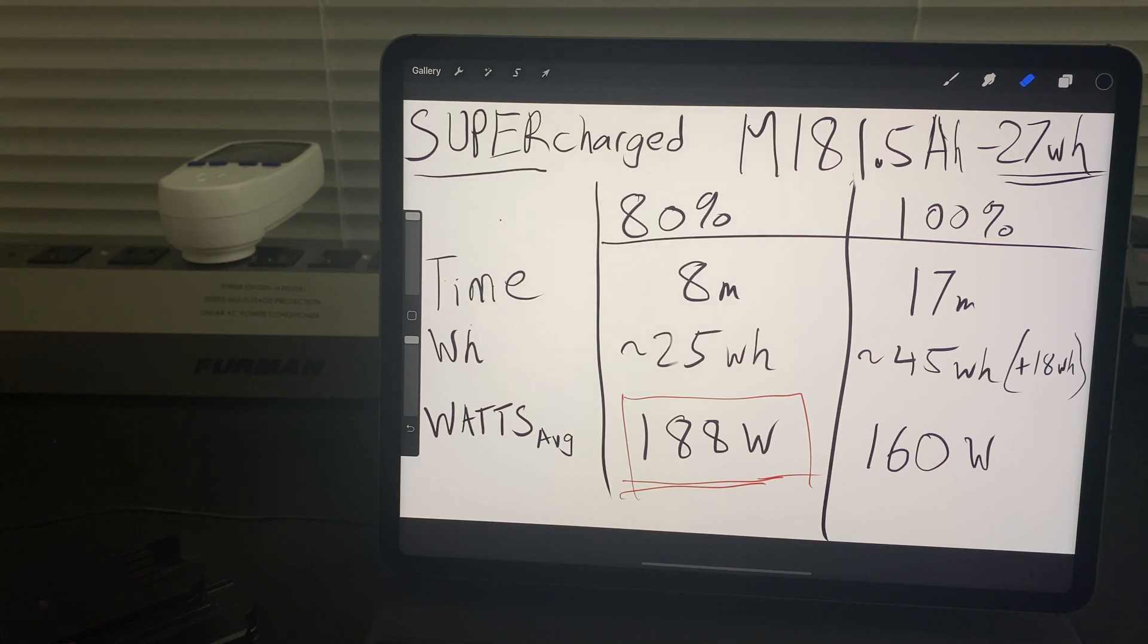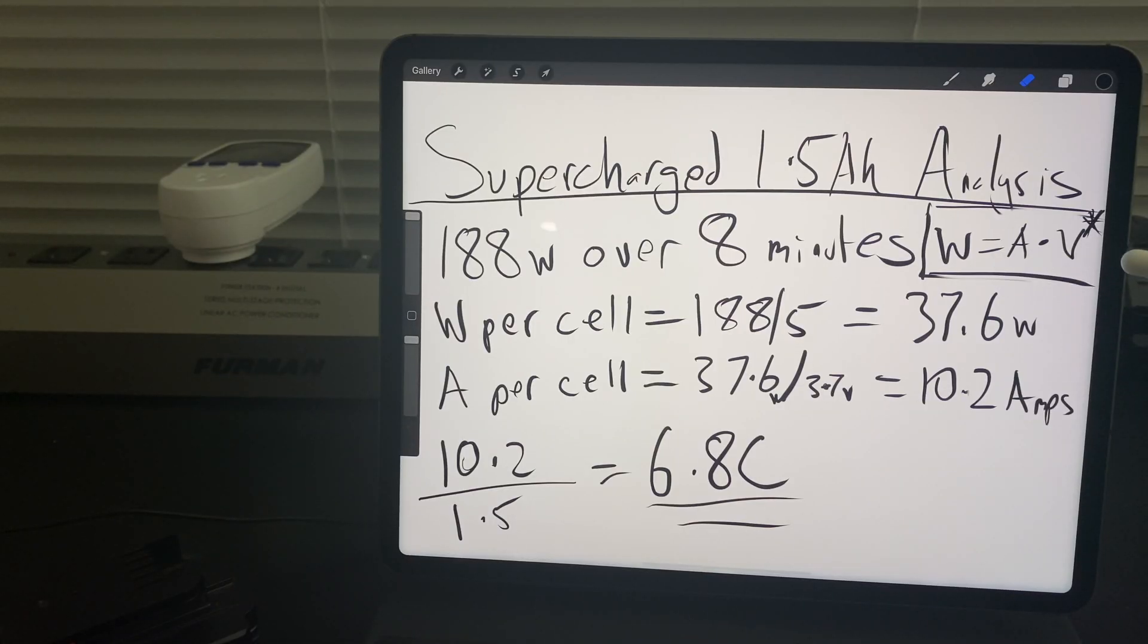So let's take a look at what that means in terms of a C rating per cell. We have 188 watts absorbed over eight minutes. Watts per cell is 188 over 5 which is about 37.6 watts. Now amps per cell, which is 37.6 watts divided by the volts. I'm going to use 3.7 volts because that is the nominal voltage of the cell and we're seeing about 10.2 amps. A 1C rating for this 1.5 amp hour cell would be about 1.5 amps. A 10.2 amp charge for this 1.5 amp hour cell would be 10.2 divided by 1.5 and that's 6.8C.